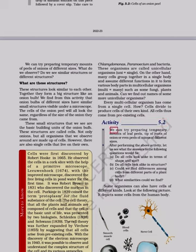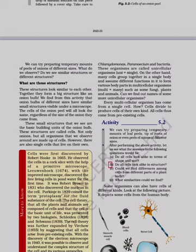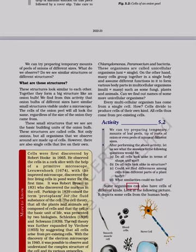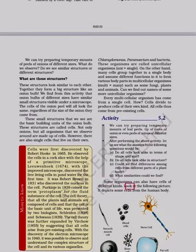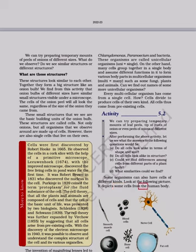Activity 5.2: We can try preparing temporary mounts of leaf peels, tip of roots of onion, or even peels of onions of different sizes. After performing the above activity, let us see what the answers to the following questions would be: A. Do all cells look alike in terms of shape and size? B. Do all cells look alike in structure? C. Could we find differences among cells from different parts of a plant body? D. What similarities could we find? Some organisms can also have cells of different kinds. Look at the following picture — it depicts some cells from the human body.